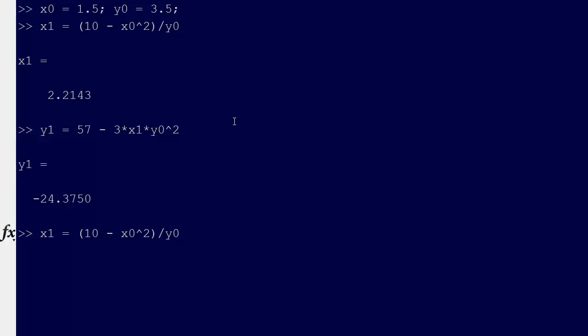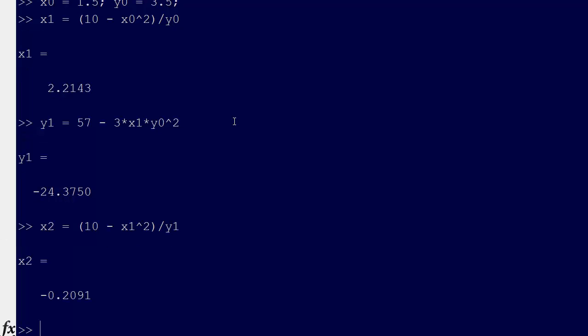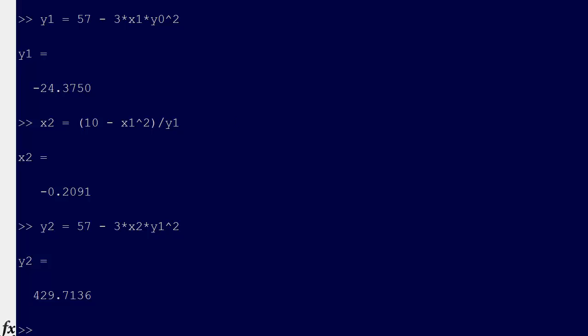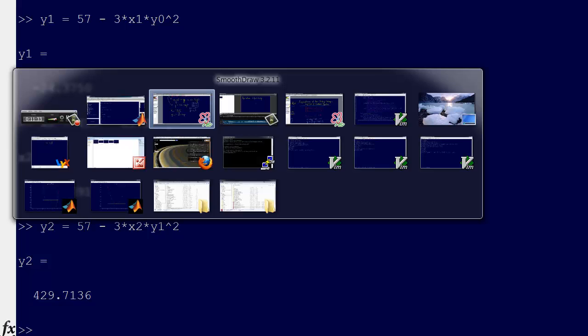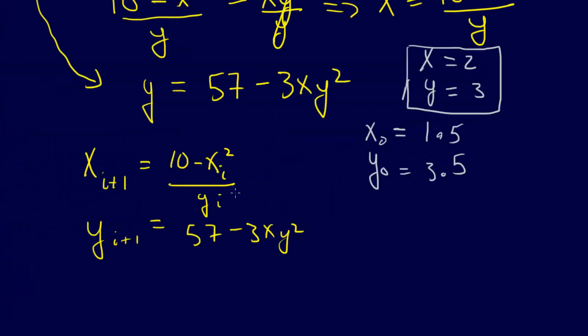Looks like we're diverging. Let's check x2. We'll do x1 here and y1 here. Minus 2.09. That's not getting us there very fast. So let's call it y2. And we get x2 and y1. 429. So you can see that this approach is diverging.